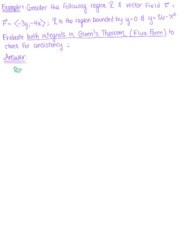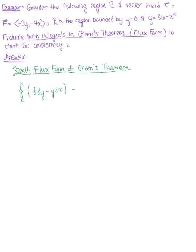Let's start by recalling the flux form of Green's theorem. Green's theorem shows us how to convert between a line integral and a double integral. We have the line integral of the closed curve C of F dy minus G dx, and Green's theorem shows this is equivalent to the double integral over region R of the divergence of F — defined as the partial derivative of F with respect to x plus the partial derivative of G with respect to y — dA.